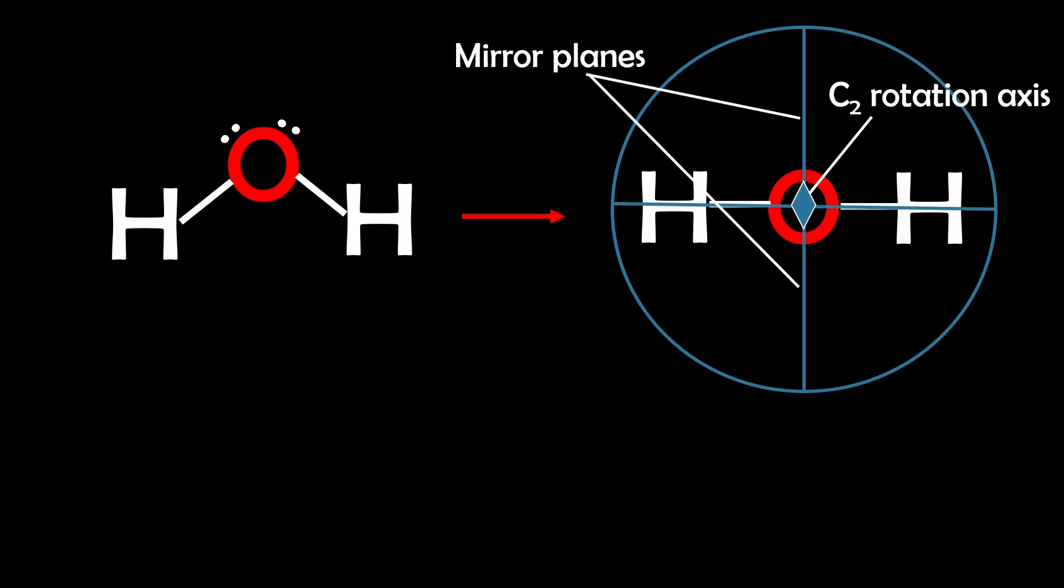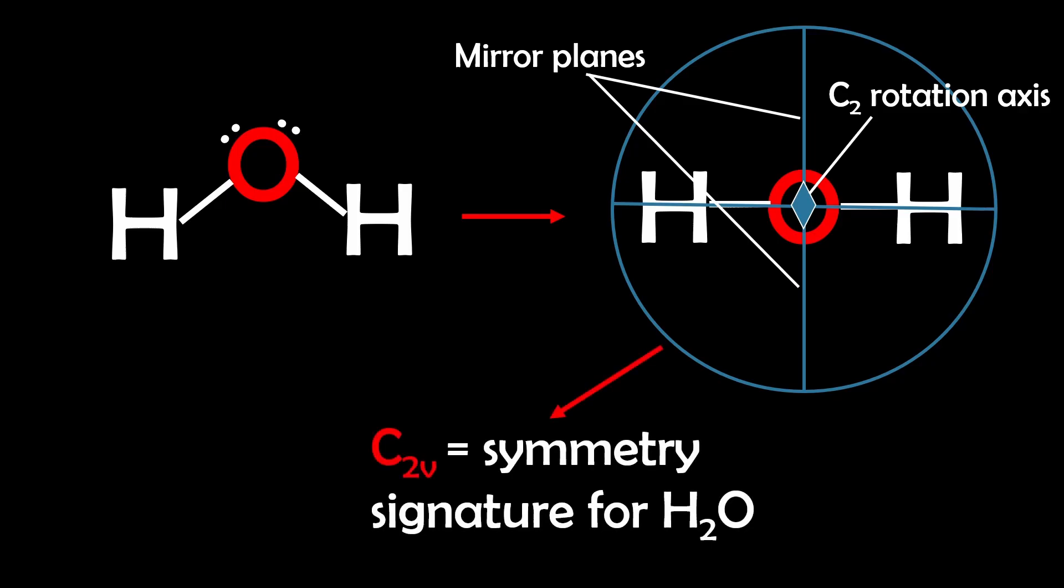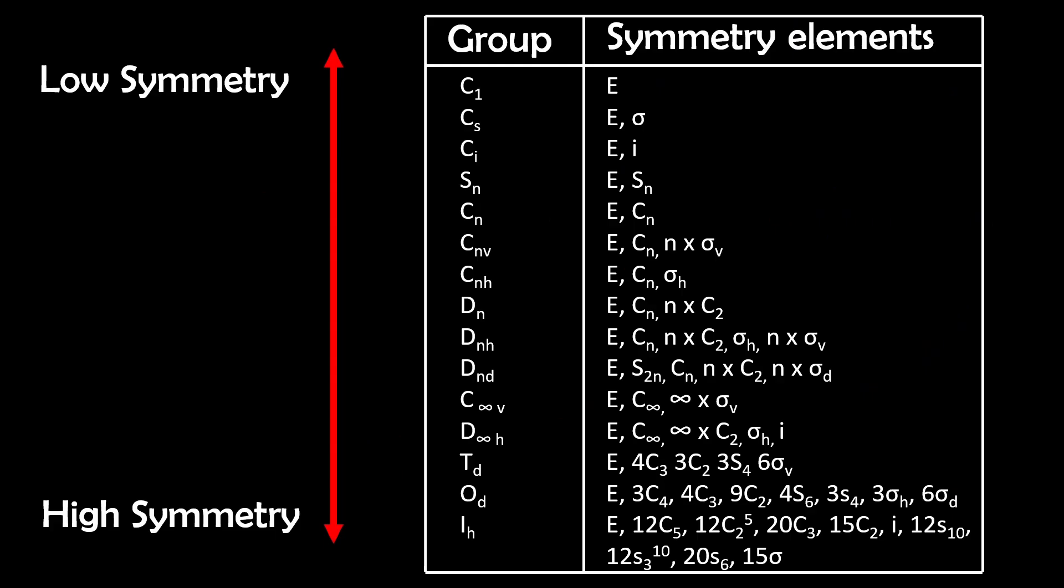But first I'll quickly go over a point group, which is a way of classifying molecules based on their symmetry elements, so things like mirror planes, rotation axes, and centers of inversion. You can think of it like a molecule's unique symmetry signature.